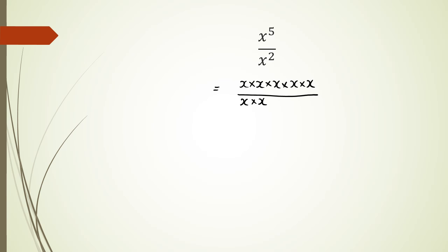Because everything is being multiplied here, what we can do is we can start canceling out x's. For example, I know that this x divided by x is going to be 1, and then this one divided by the other x is also equal to 1.